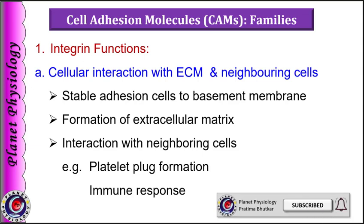The first function is cellular interaction with the extracellular matrix and also with neighboring cells. By attaching the cells to the extracellular matrix through proteins like laminin, collagen or fibronectins, they create stable cell adhesions and also help in formation of the extracellular matrix. They also show intercellular interactions through various adhesion molecules on neighboring cells, or bacteria, or viruses — for example, integrins are involved in platelet-plug formation in case of vascular damage, or in reactions between immune cells and antigens.